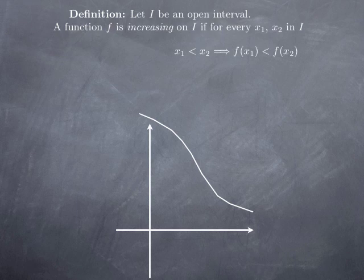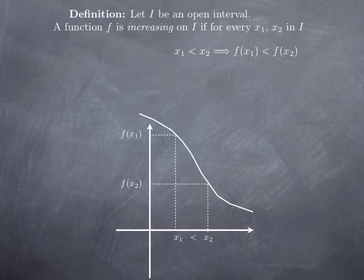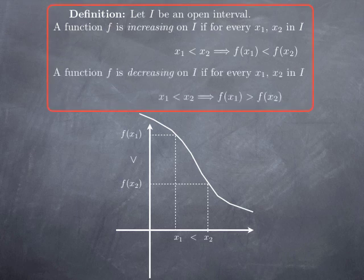Similarly, a decreasing function is something that would look like that — in other words, when I move from left to right, the graph is going down. So that means if I go from x1 to a value x2 on its right that is greater, then the y values should decrease. In other words, f of x2 is going to be smaller than f of x1. So on an open interval I, a function f is decreasing if whenever x1 is less than x2, then f of x1 is greater than f of x2. In other words, a decreasing function reverses the direction of inequalities.